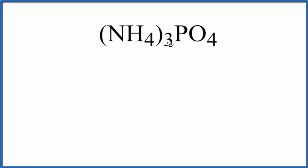To write the name for NH43PO4, we first have to recognize that this NH4 here is a polyatomic ion, and then we have the phosphate ion. We have two polyatomic ions in this compound.